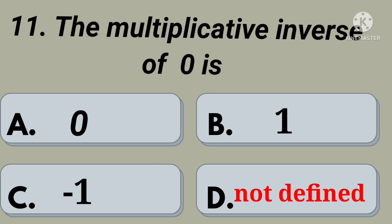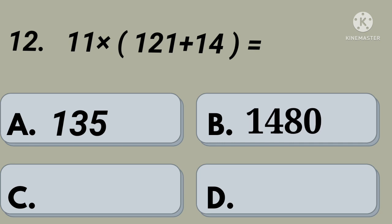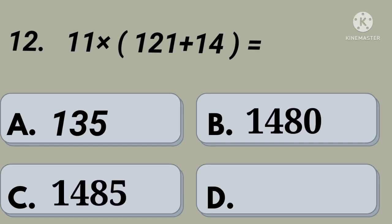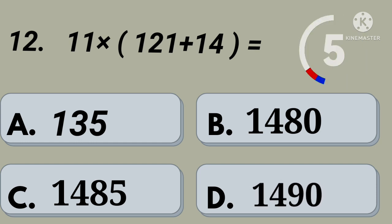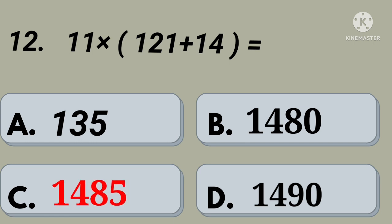Twelfth question: 11 into 121 plus 14 equals. Option A: 135, option B: 1480, option C: 1485, option D: 1490. Your time starts now. Right, option C: 1485.